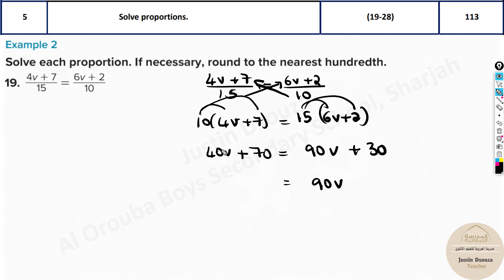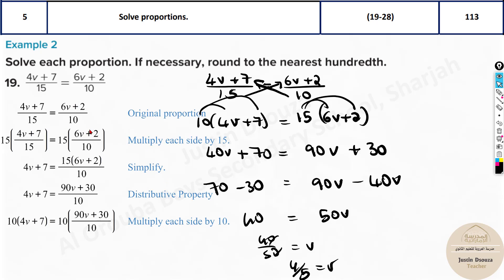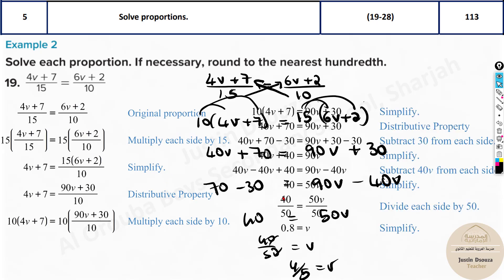So this 90V remains and this 40V goes to the other side, becomes negative 40. Whereas 70 over here and minus 30. Now let's simplify: 70 minus 30 would give you 40 equals 50V. Now take 50 to the other side: 40 by 50 equals V, that is 4 by 5. 4 by 5 is the answer. This is how we solve it.